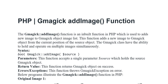From the current position of the source object, the Gmagick class has the ability to hold and operate on multiple images simultaneously. Syntax: bool Gmagick::addImage(source). Parameter: This function accepts a single parameter whose name is variable source, which holds the source Gmagick object. Return value: This function returns the Gmagick object on success. Errors and exceptions: This function throws a Gmagick exception on error.